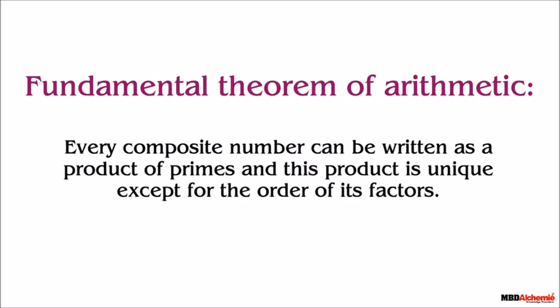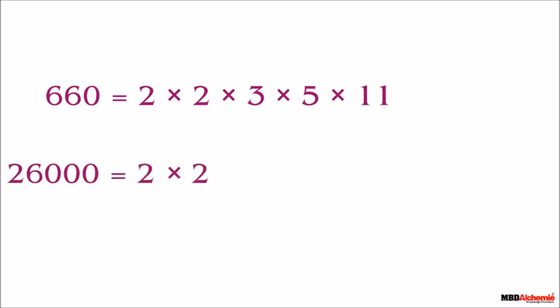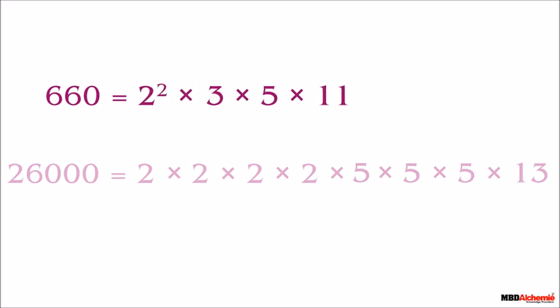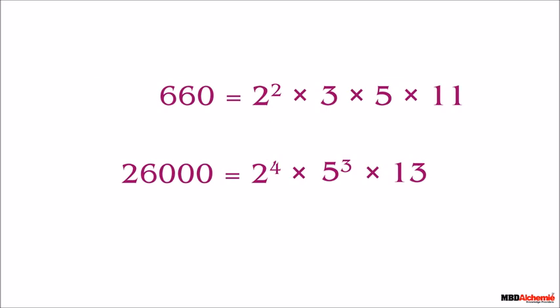Let's take some more examples. The prime factors of 660 are 2 into 2 into 3 into 5 into 11. The prime factors of 26,000 are 2 into 2 into 2 into 2 into 2 into 5 into 5 into 5 into 13. Notice that in the prime factors of 660, 2 is repeating twice, and in the prime factors of 26,000, 2 is repeating 4 times and 5 is repeating three times. Since we can write products of repeating numbers as powers, the factors can be written in exponential form as shown.